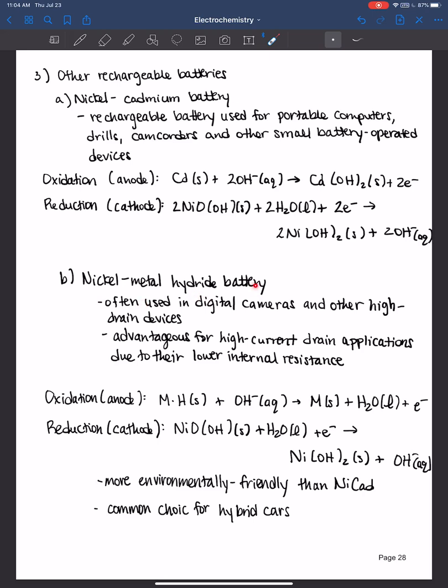And so there are other choices for these very similar type of nickel battery. And that is to use a nickel metal hydride battery. This is also used for digital cameras, high drain devices, and it's very advantageous for high current drain applications due to the lower internal resistance. And if you see M, that just stands for metal and H stands for hydride. Hydride is a hydrogen with two electrons and a negative one formal charge. So you can see for this nickel metal hydride battery that it occurs in basic solution, but you're still using the nickel species for the reduction. This is more environmentally friendly than the nickel cadmium batteries. And it's a common choice for hybrid cars.